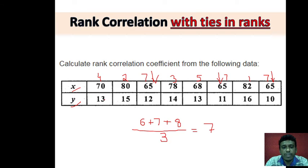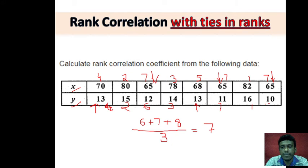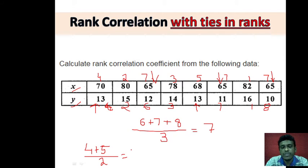Now for the Y variable, we also have ties. The first through third ranks are assigned normally, then for the fourth and fifth ranks, there is a tie. The next ranks are sixth, seventh, and eighth. So for the tie at fourth and fifth positions, we calculate 4 plus 5 divided by 2, which equals 4.5. The average rank we are going to give is 4.5. Decimal values are allowed in this method.